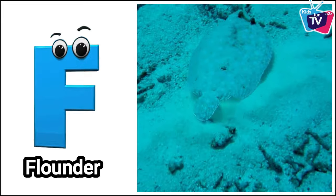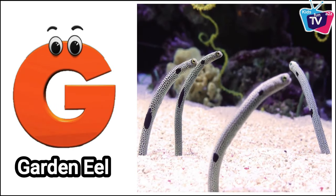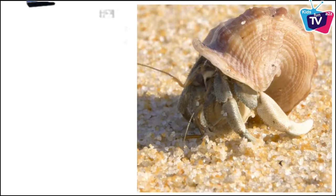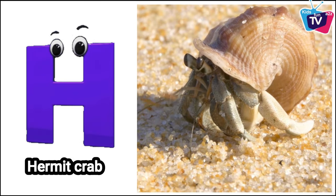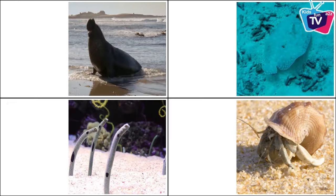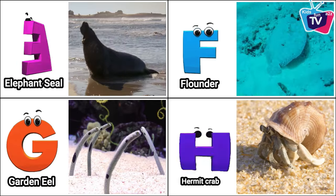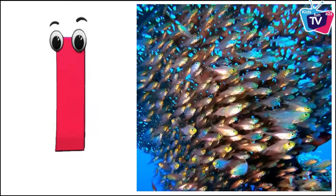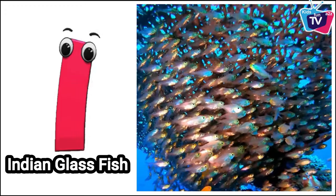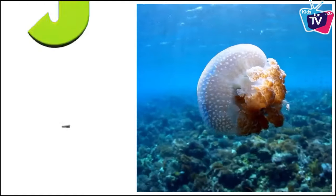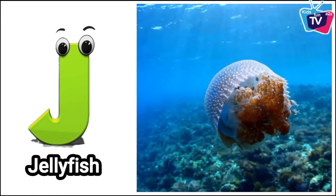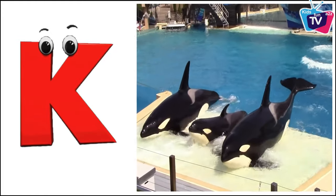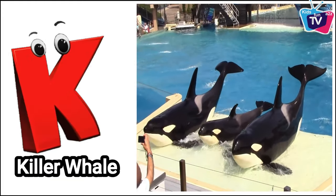Flounder. G is for garden eel. H is for hermit crab. I is for Indian glass fish. J is for jellyfish. K is for killer whale.